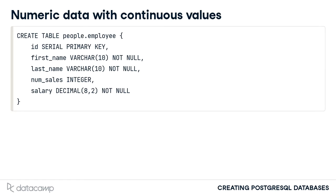Precision is the total number of digits in the number before and after the decimal point. Scale is the number of digits to the right of the decimal point. In this table, we limit the column entries to 8 digits of precision and 2 digits of scale. This assumes we won't have anyone making $1 million or more at our small shop.